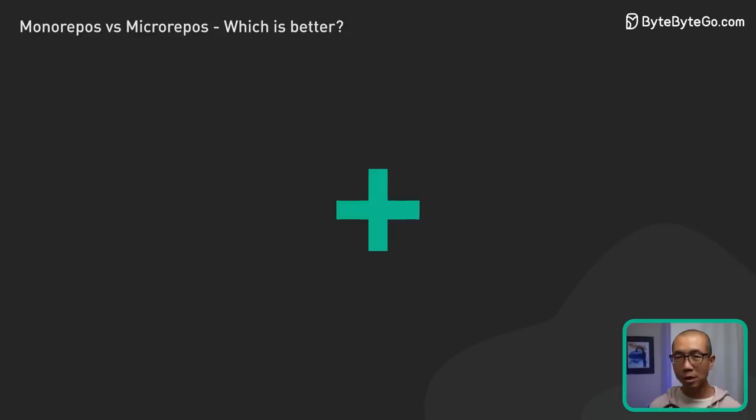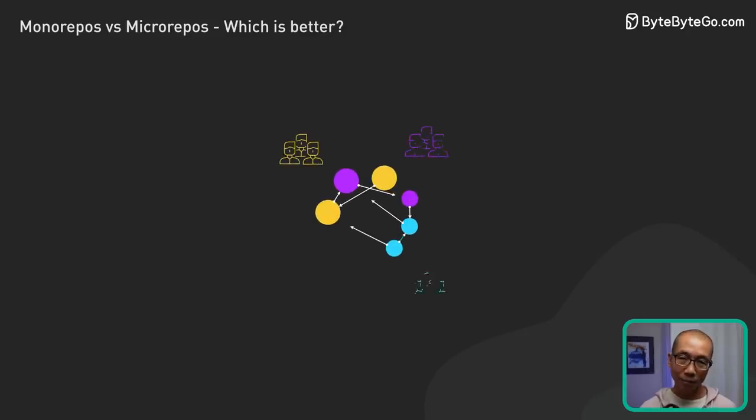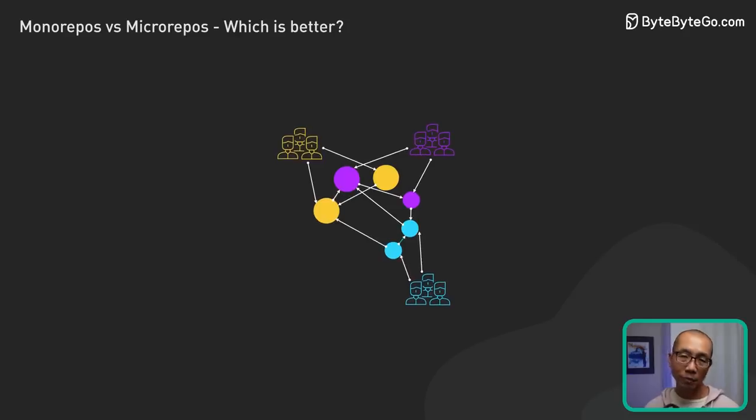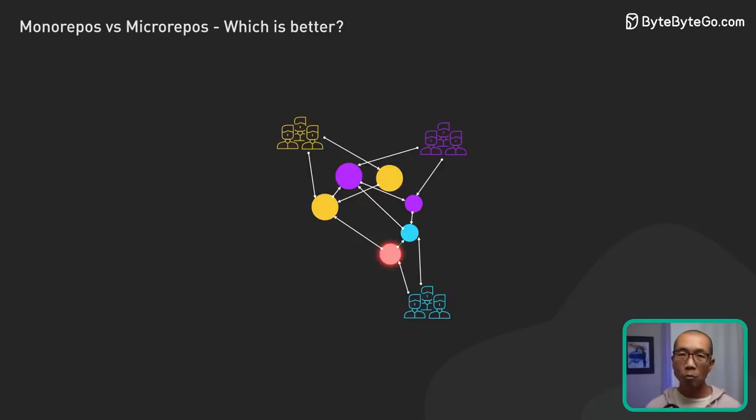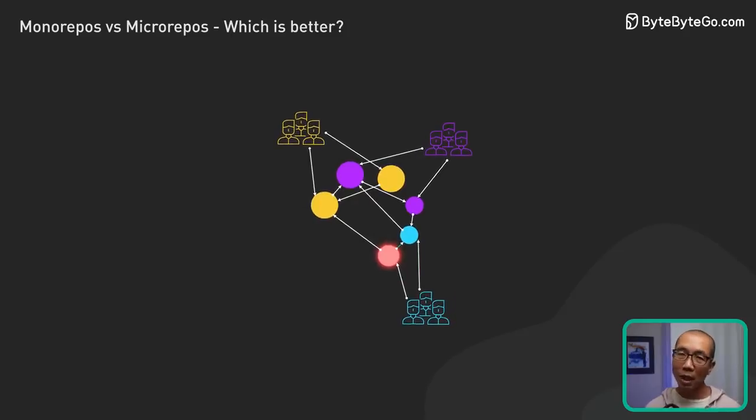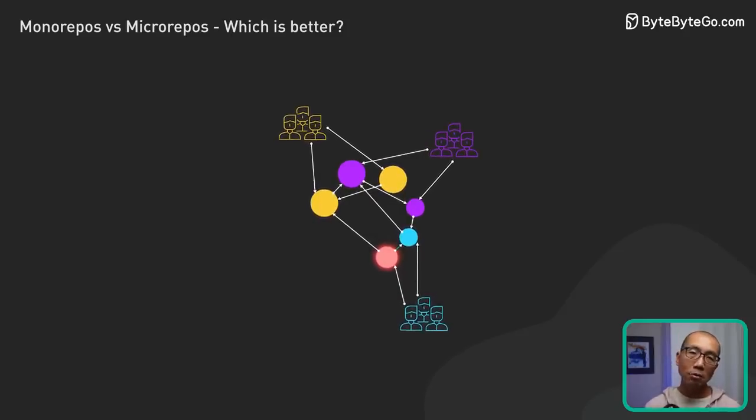Now let's walk through the pros and cons. Micro-repos offer independence. Each team can manage and scale their repos as needed. Another advantage is risk isolation. If something goes wrong in one repo, it doesn't affect the others, reducing the blast radius.